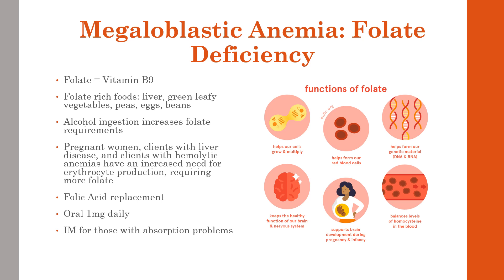Megaloblastic anemias are caused by folate or B12 deficiency, both needed for normal DNA synthesis. When either is deficient, erythrocytes are abnormally large — hence the term 'megaloblastic.' When DNA synthesis is impaired, the cell cycle can't progress from the G2 growth stage to mitosis, leading to continuing cell growth without division, presenting as macrocytosis. Mean corpuscular volume on CBC will be very elevated, and these anemias develop slowly so many patients won't have symptoms right away.